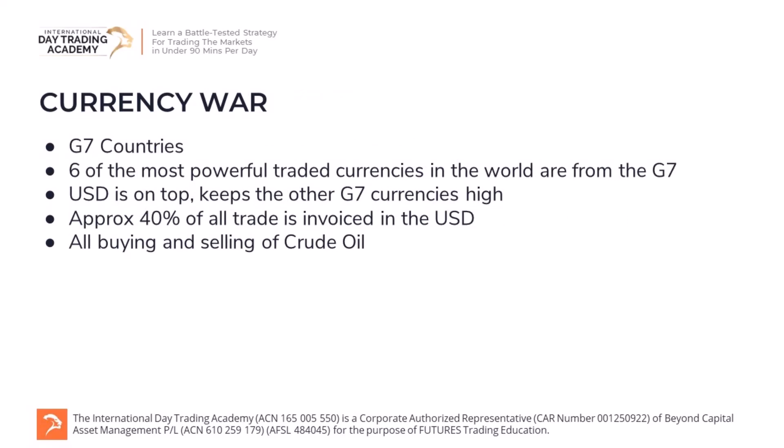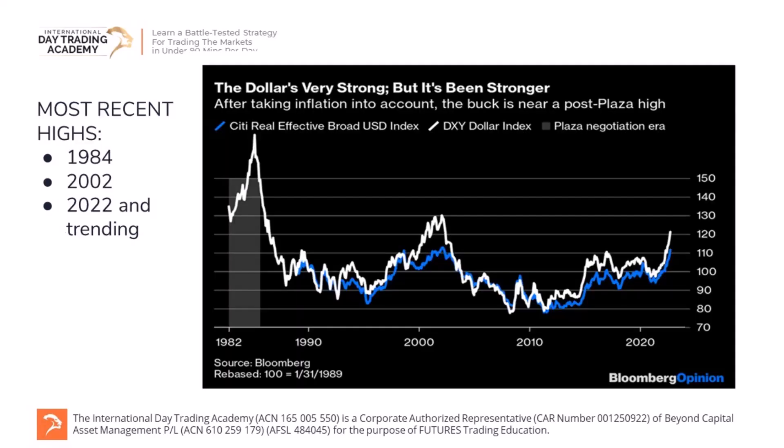There is a currency war going on at the moment. These G7 countries basically rely on the US dollar — it is the major currency that we trade for everything. About 40% of all trade is invoiced against the US dollar, and all buying and selling of crude oil is currently using the US dollar. So the US dollar really keeps these G7 countries strong — France, Canada, Great Britain, Japan — those countries are all reliant on the US dollar being high.